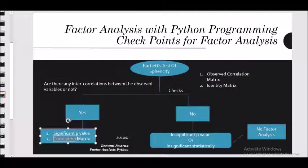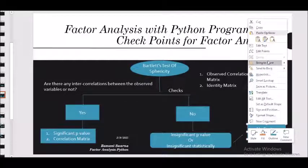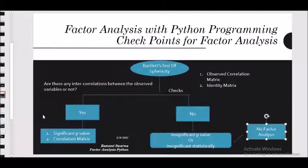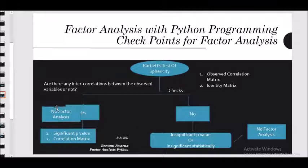In the Bartlett's test — which I call a checkpoint for factor analysis — it helps you understand whether you can get some kind of factors from the data set, or whether it's a futile attempt. The first checkpoint is called the Bartlett's test of sphericity. You need to ask yourself: are there any inter-correlationships between the observed variables or not?